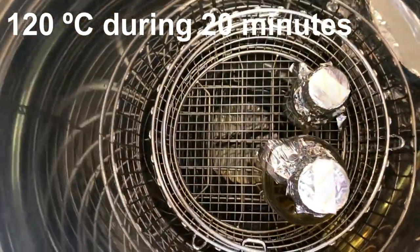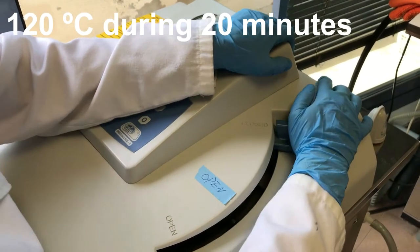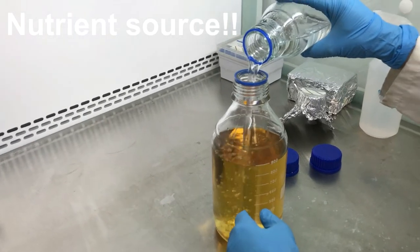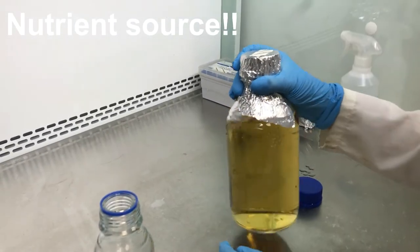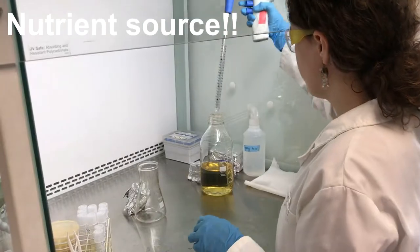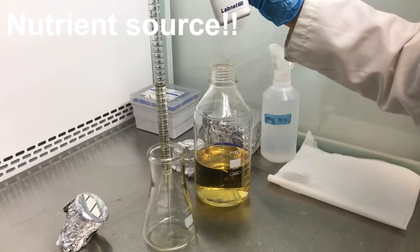Once they are cooled down, we mix them together and we obtain the nutrient source. We place some of it in a flask, such as an Erlenmeyer. And then we add the bacteria.